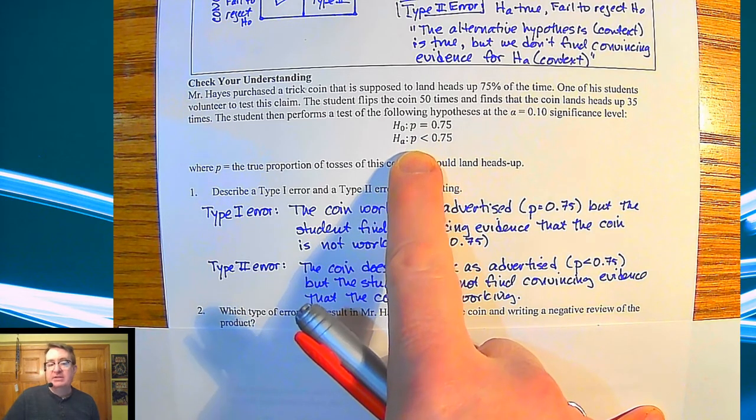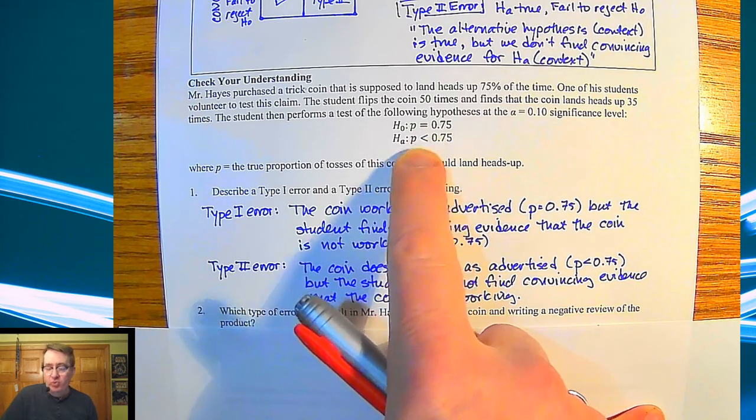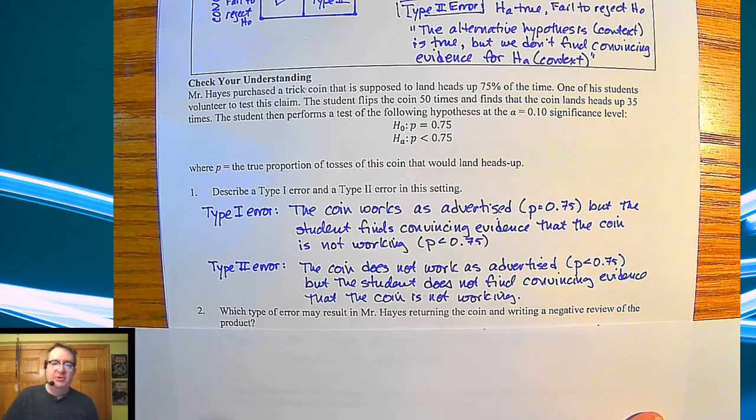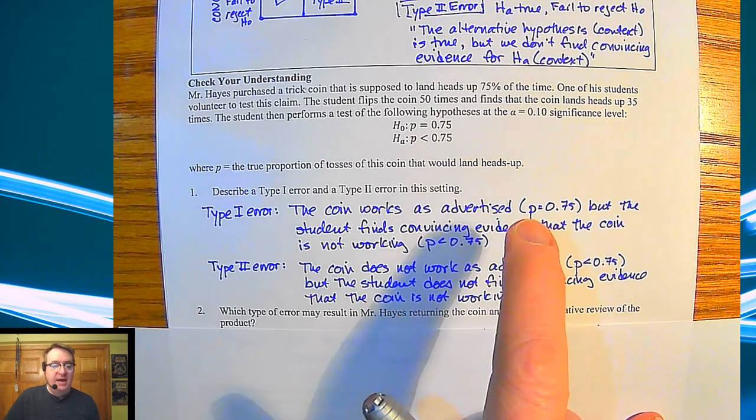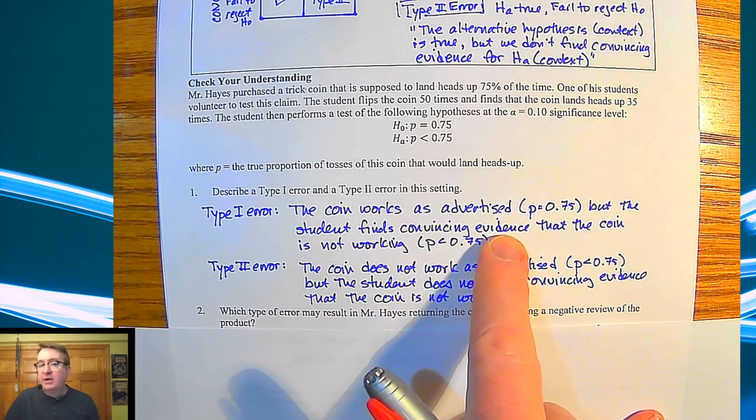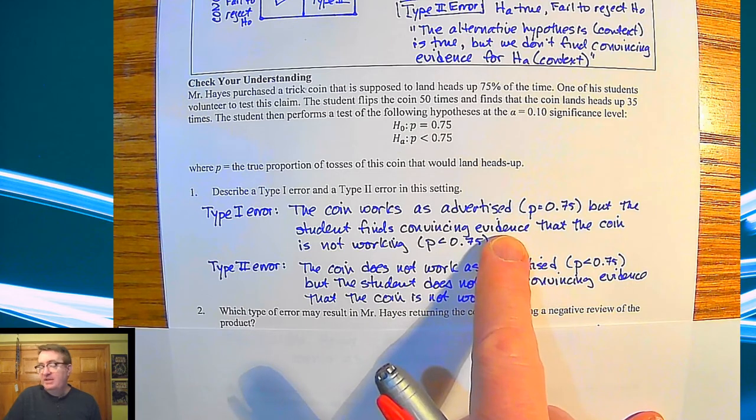For me to write a negative review or to return this coin, I would have to say I have evidence to say that it's not as good as what it is. So which one of these accepts the alternative hypothesis? And that is the first one.